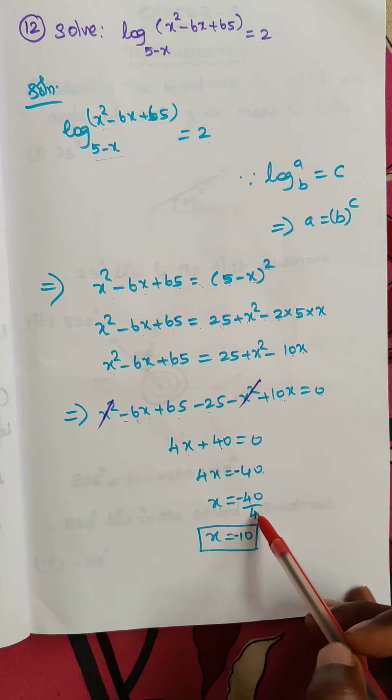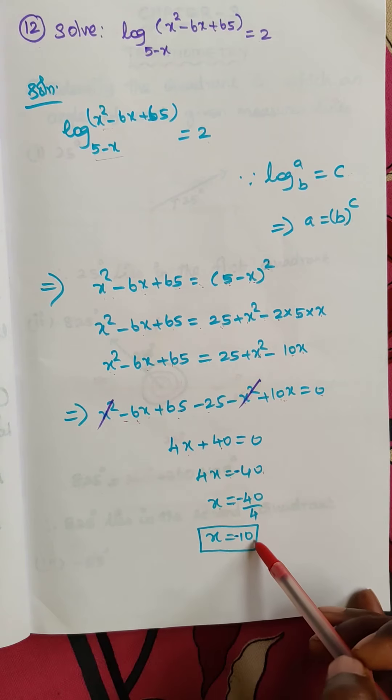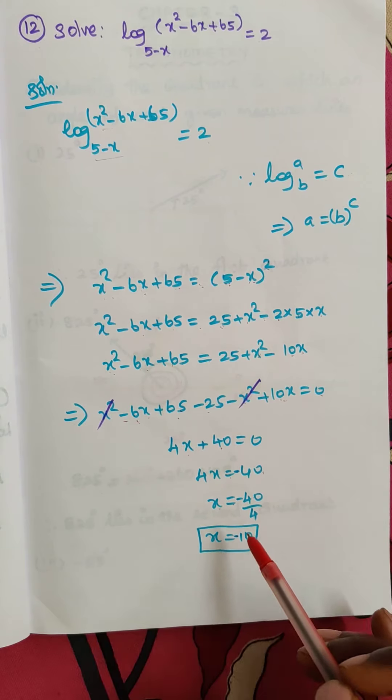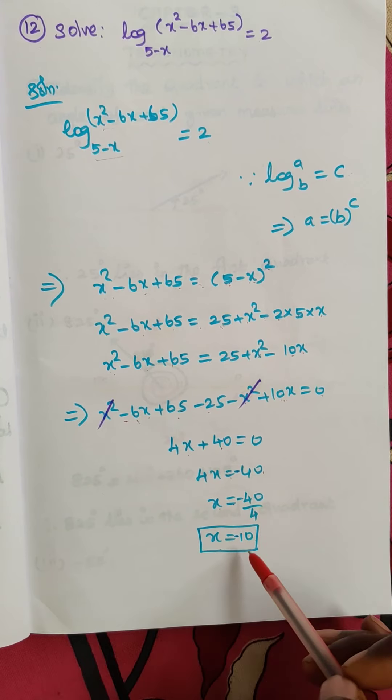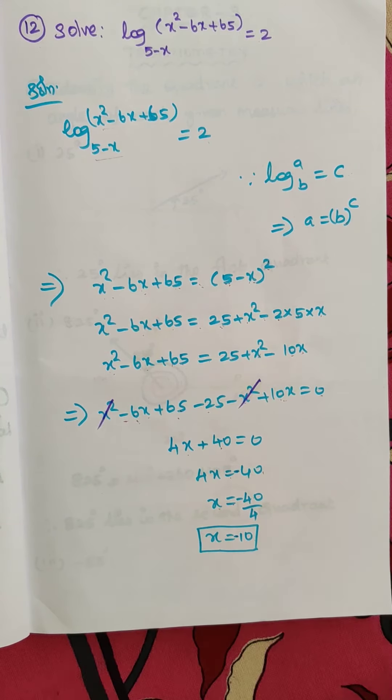So x = -40 ÷ 4, then x is equal to -10. That is the answer for this. Thank you, children.